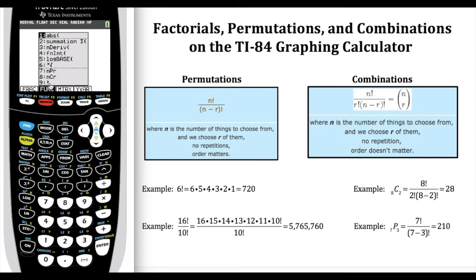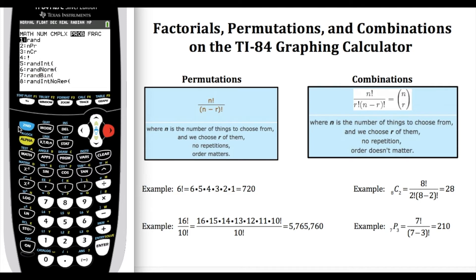So from there I would select 9 to get my exclamation point. I can also hit the math button and then arrow over to the probability menu, and there again you see the exclamation point which would be the factorial notation, the combinations, and the permutations.